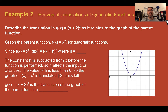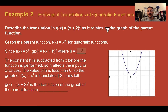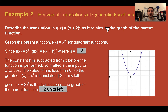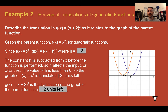Example two: horizontal translations of quadratic functions. Describe the translation in g of x equals x plus two, quantity squared, as it relates to the graph of the parent function. The plus two is inside the parentheses, meaning it's the opposite of that — h is negative two. Since it's the opposite of what we see, we're actually going to move it two units to the left. So x plus two, quantity squared, is the translation two units left. Looking at the vertex, originally it was at zero, zero — now it is at negative two, zero: two units to the left.